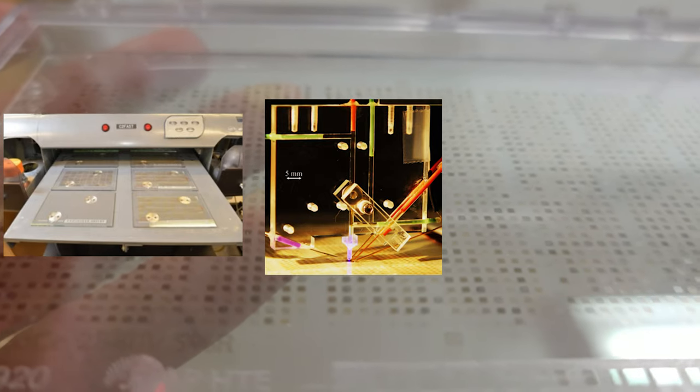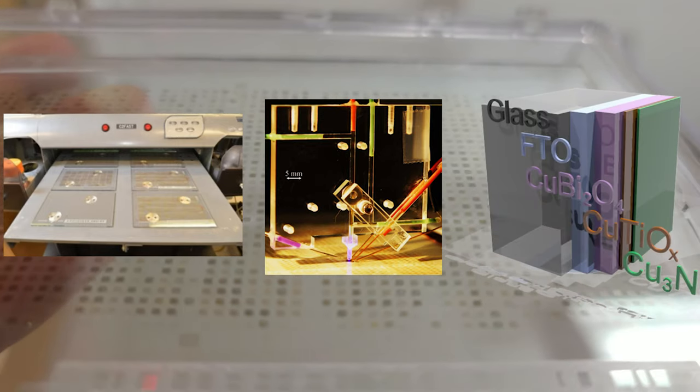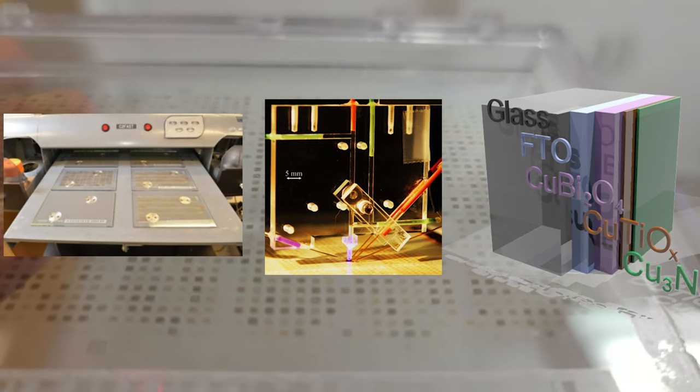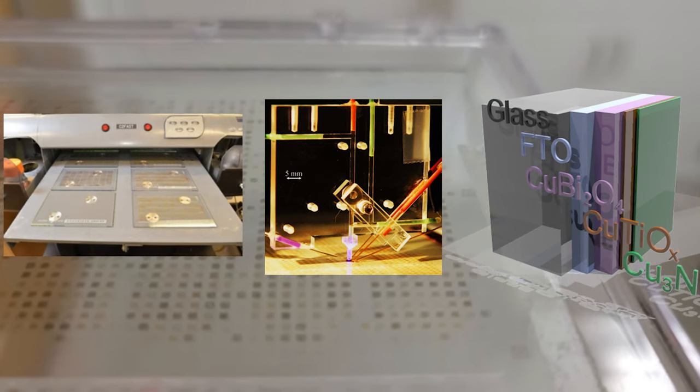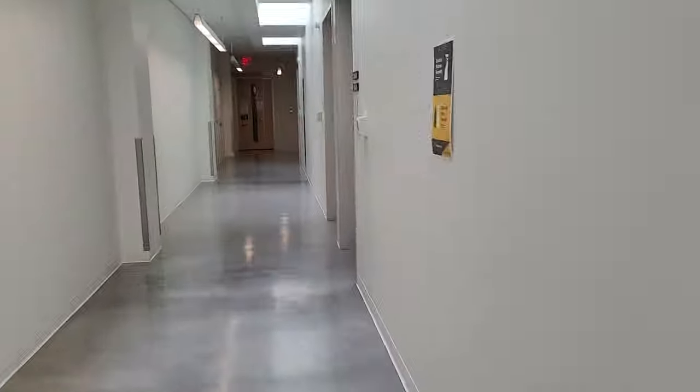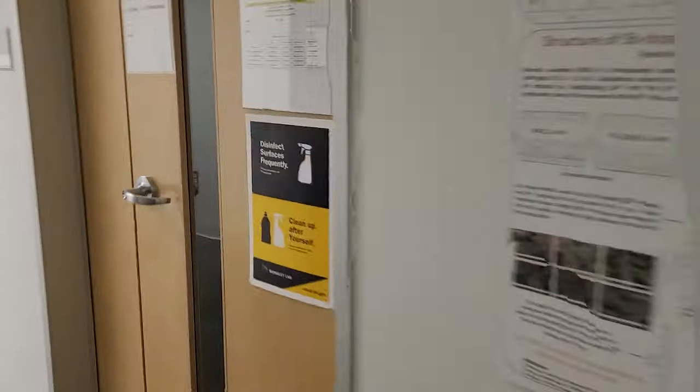These libraries can be deposited on known semiconductor substrates as well to identify catalysts which couple well electronically with the underlying semiconductor. Once an optimum material is identified, it can be scaled up using sputtering and further evaluated and tested using various laboratory experiments. Let's go take a look at some of the experimental techniques we employ to understand material properties.